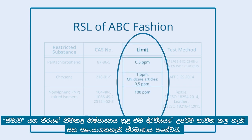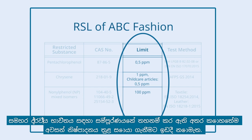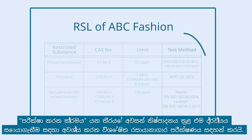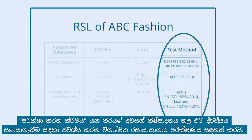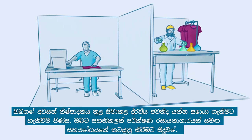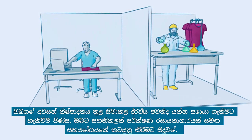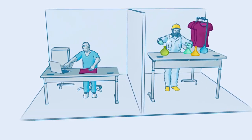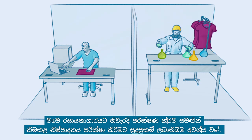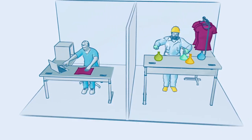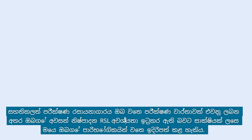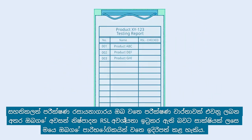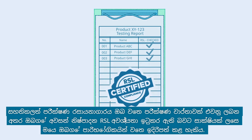The Limit column shows the maximum allowable and detectable amount of that substance in the finished product. Some substances are completely banned and are not allowed to be found in the end product at all. The Test Method column indicates the specific laboratory test required for detecting that substance in the end product. To detect whether there are restricted substances in your final products, you will need to collaborate with a certified testing laboratory qualified to test finished products with the correct test methods. The laboratory will send you a test report, which you can forward to your customer as proof that your end products fulfill the RSL requirements.